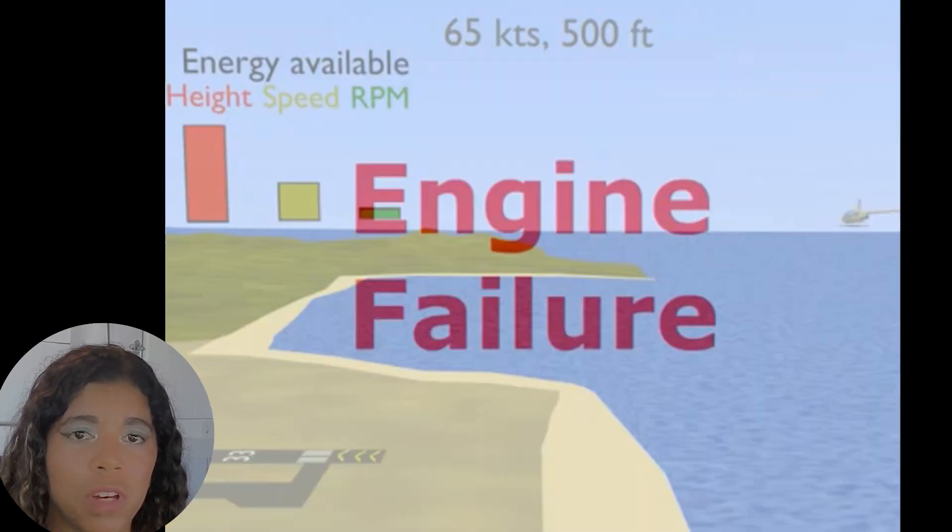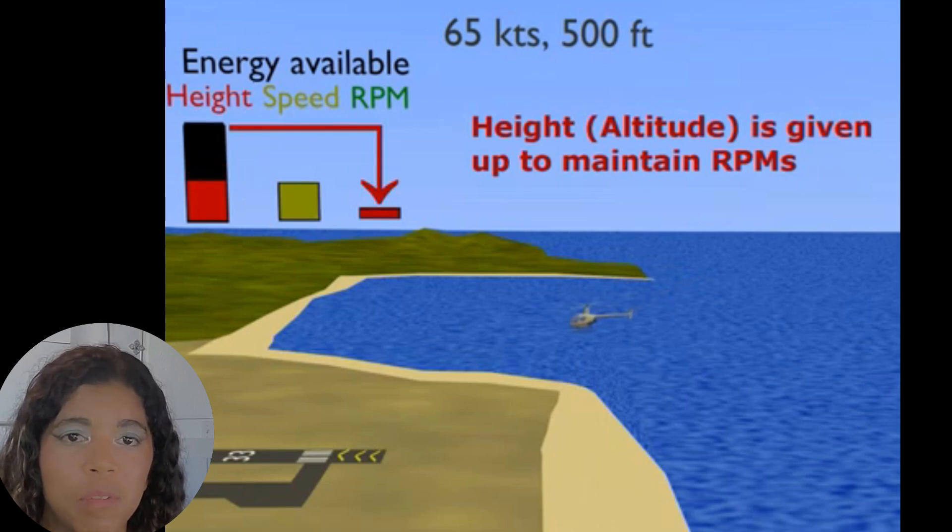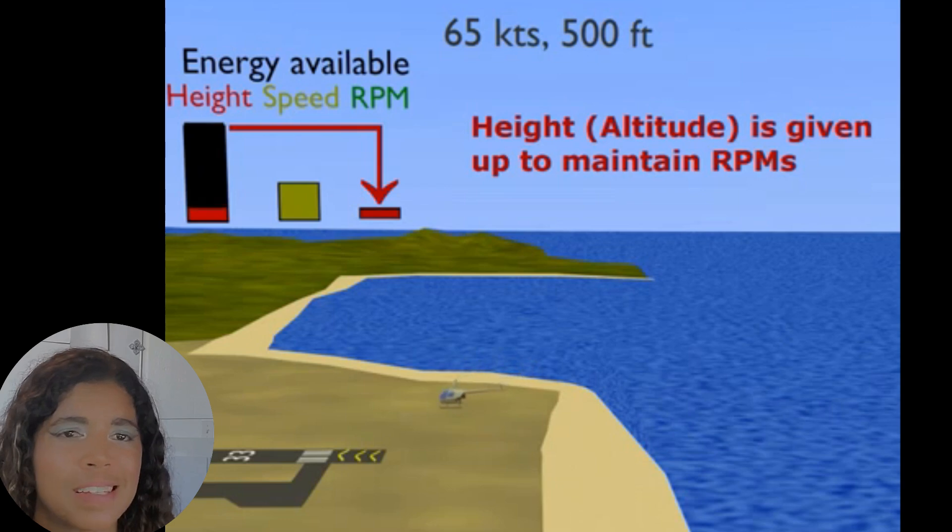So here we have an engine failure and as we descend the air is coming up through the rotor disc which allows energy from the height bucket to maintain our RPMs. I'm going to go ahead and slow this animation for a moment just to point something out.